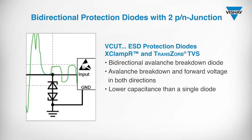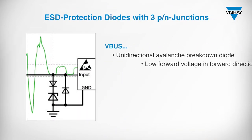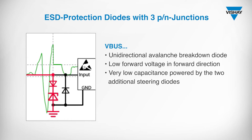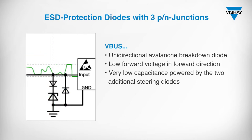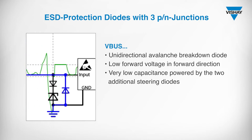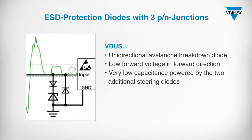An example from our product portfolio is our bidirectional VCUT series. In the third interconnection, there are two diodes in series with reverse polarity, and in addition another diode is connected in parallel. The lowest capacitance results from the series connection of the diodes. The electrical behavior of such a circuit has a unidirectional character. An example from our product portfolio is the VBUS series.